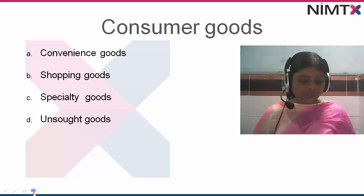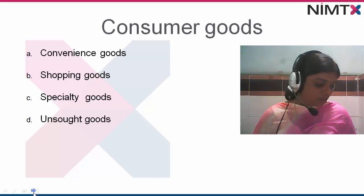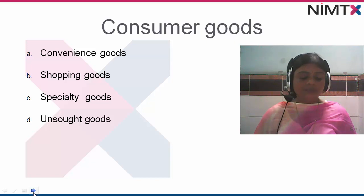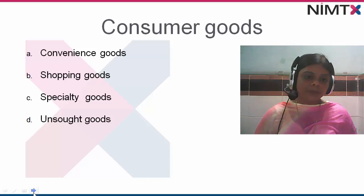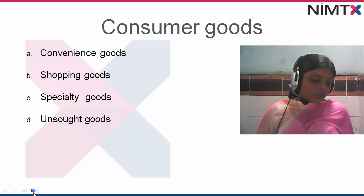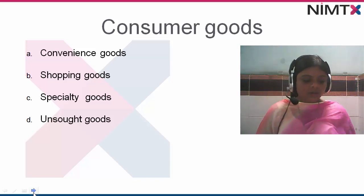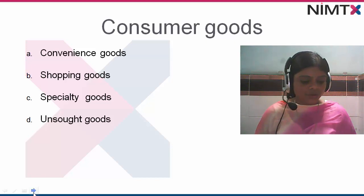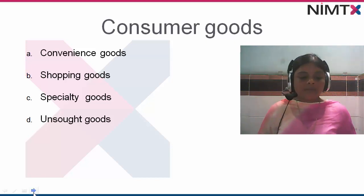Your buying power always decides how you fulfill your need. According to your buying power, you will fulfill your need and want. Unsought goods are goods that the consumer doesn't know about or doesn't normally think of buying. The classic examples of unsought goods are life insurance and ambulance services. So this was all about the unit — industrial goods and their classification.